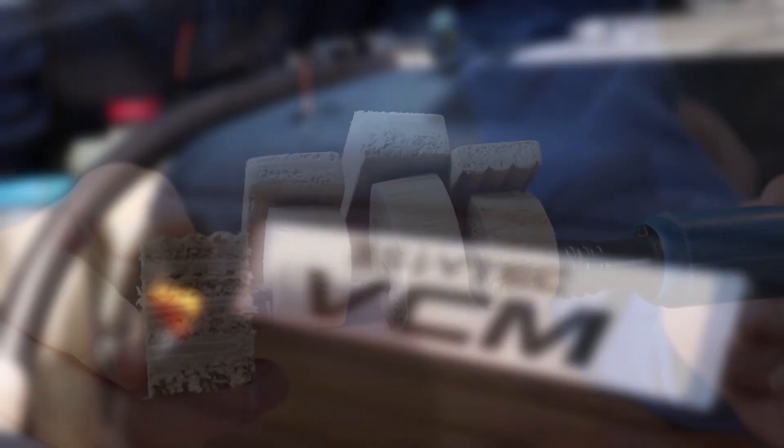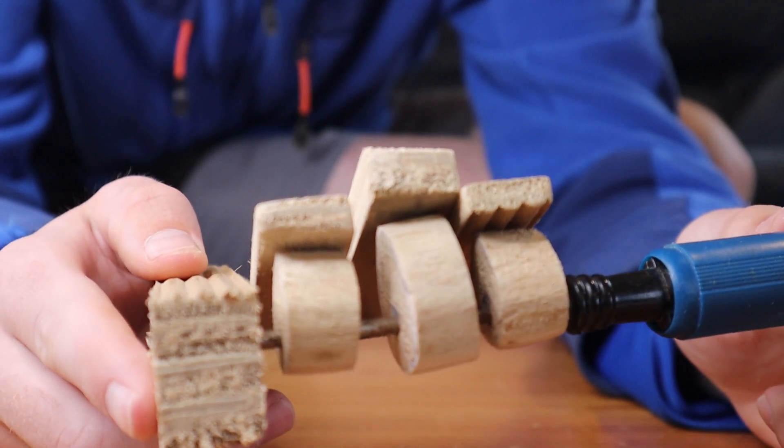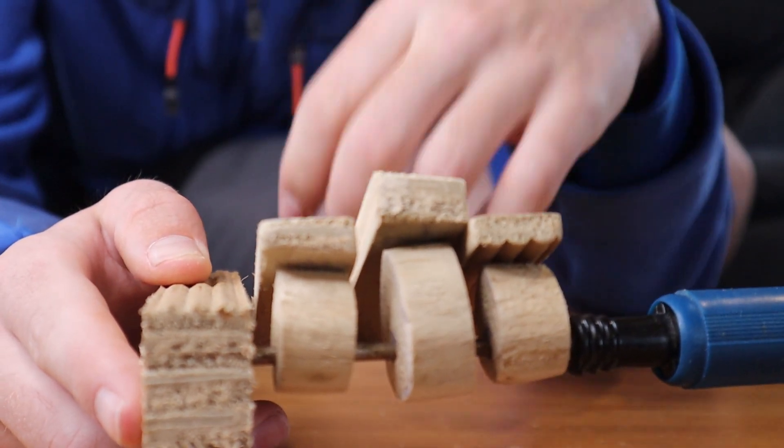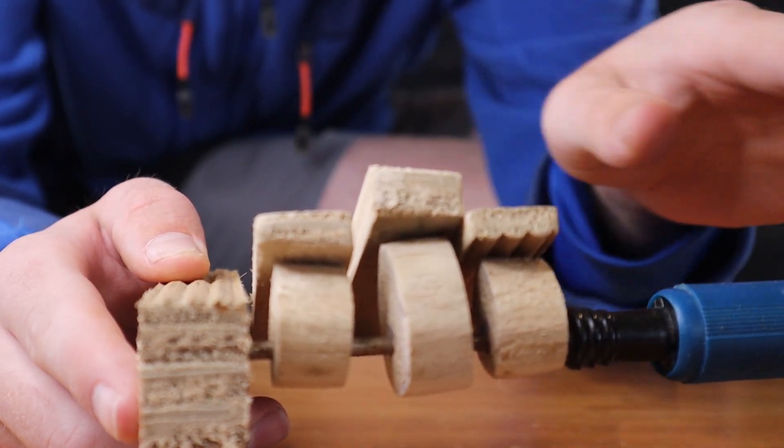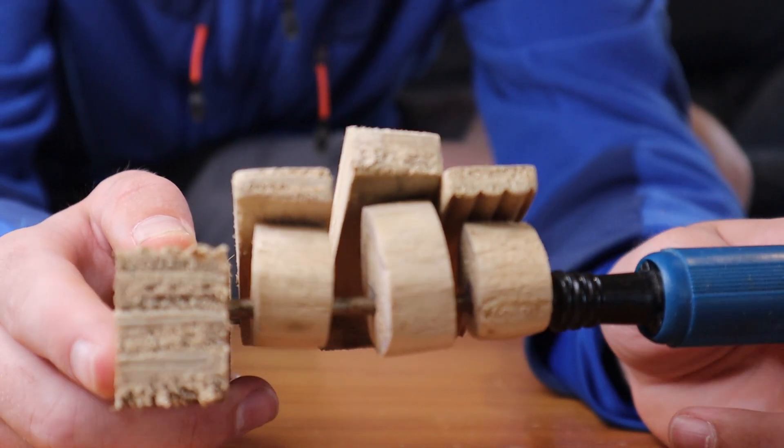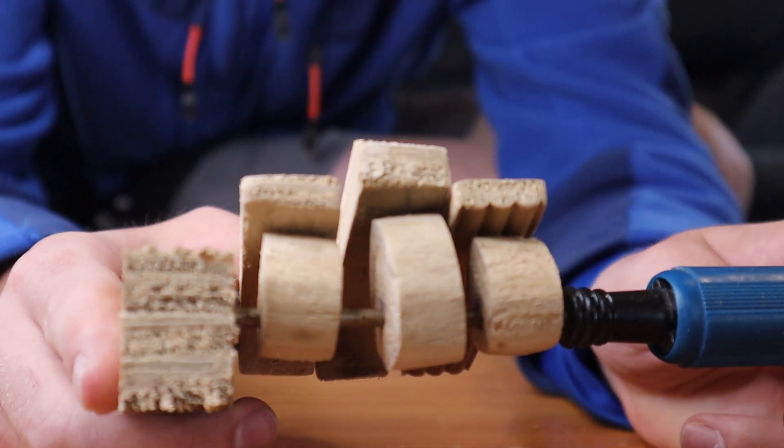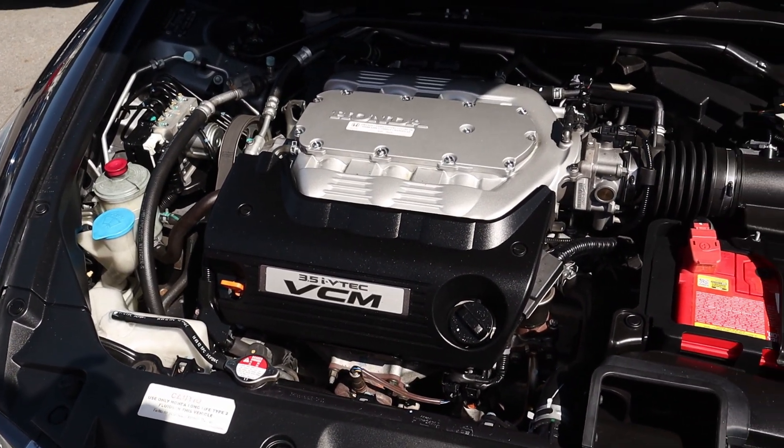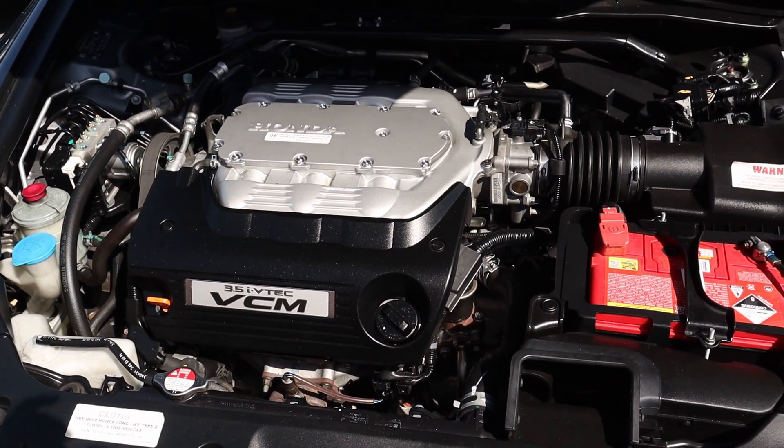And then last of all we have SOHC iVTEC VCM, and this combines three different technologies. You've got SOHC VTEC which of course is just your VTEC but only on the intake side. iVTEC which of course adds the variable valve timing, and VCM which is variable cylinder management. So what that means is that it's able to run the V6 on six cylinders or as like a V4 or as an inline three.